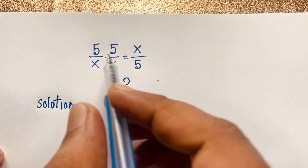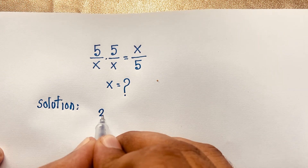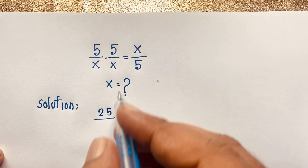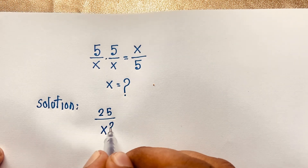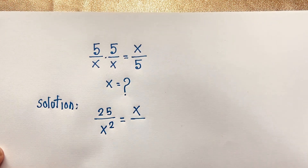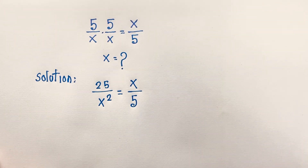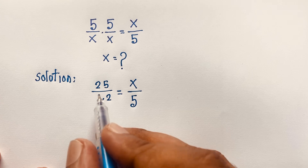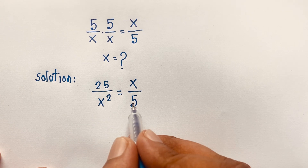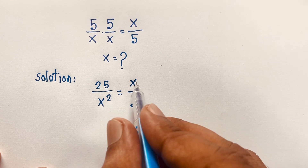You can multiply: 5 times 5 gives 25, and x times x gives x squared. So we have 25 over x squared equal to x over 5. Now cross-multiplying: 25 times 5 gives 125, and x squared times x gives x cubed.